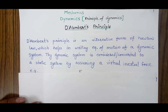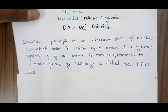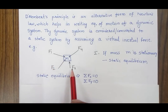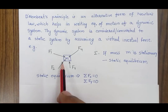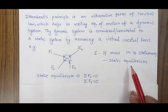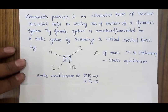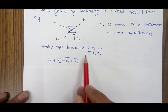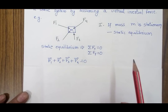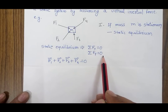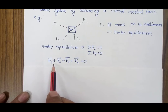To understand this, let's consider a problem where we have a mass M and four different forces F1, F2, F3, and F4 acting on mass M. Consider the first case where the system is stationary. For static equilibrium, we can write that the total force acting on the system will be zero — the summation of all horizontal forces will be zero and the summation of all vertical forces will be zero.